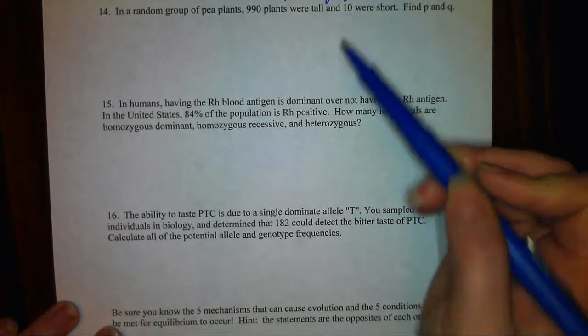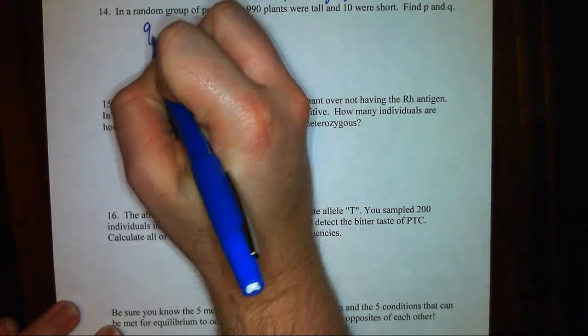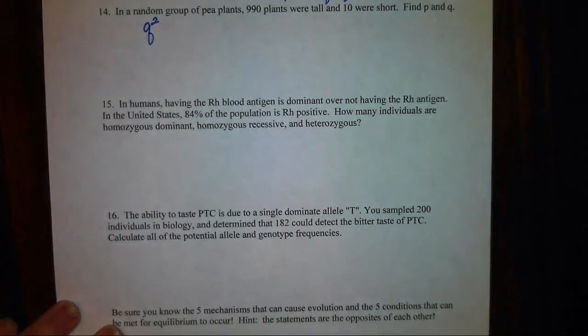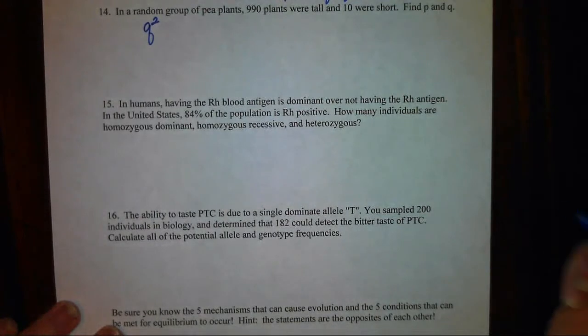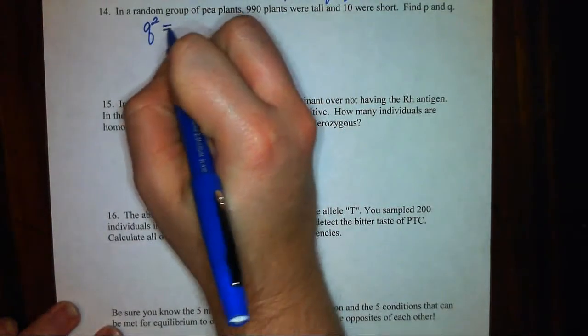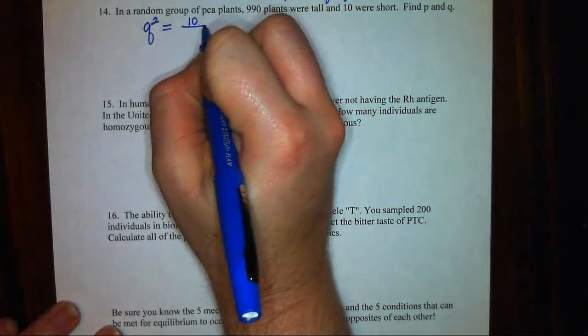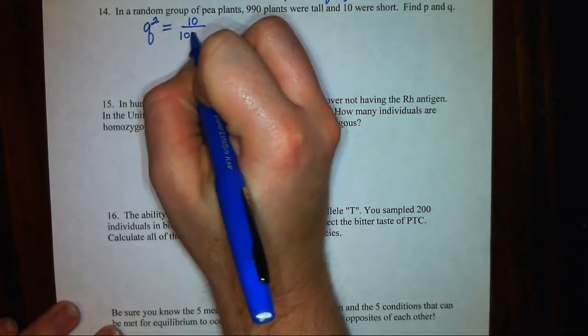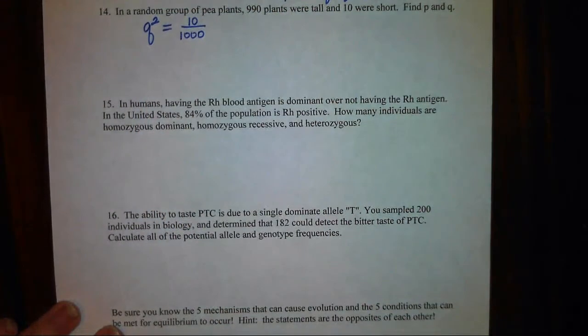From my variables, I can pick out that Q squared represents the percentage of the population that is homozygous recessive. So Q squared, to get started, is going to equal 10, those are the short plants, over my total of 1,000 plants.